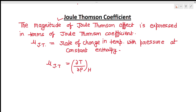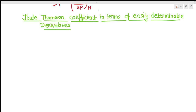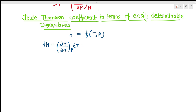We start with enthalpy. We know enthalpy is a state function, so we can write it as a function of temperature and pressure. As it is a state function, it will be a perfect differential. So we can write: dH = (del H / del T) at constant P · dT + (del H / del P) at constant T · dP.